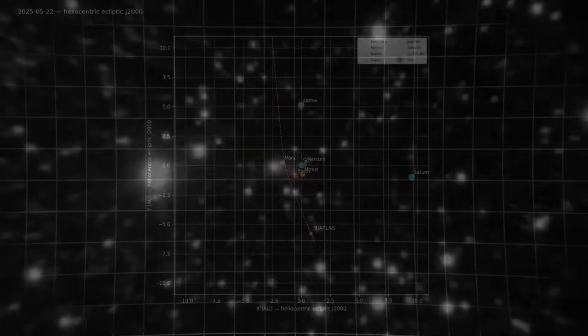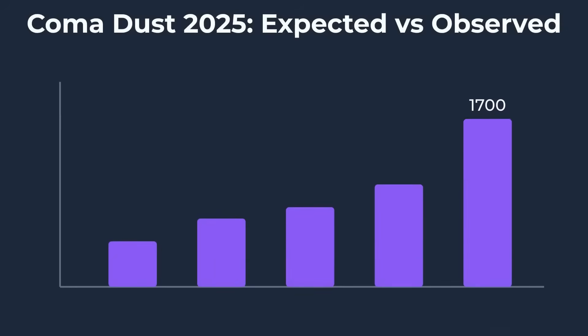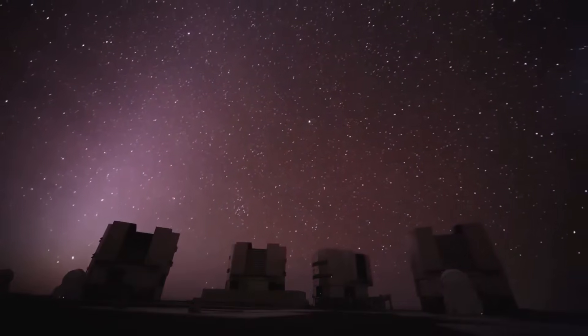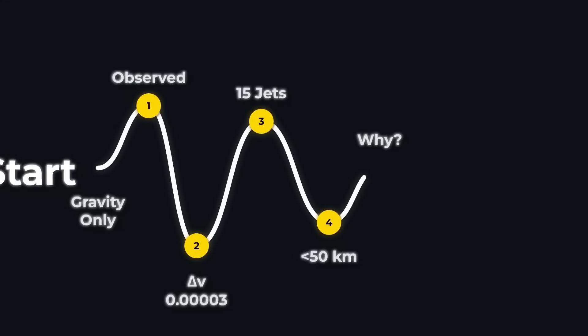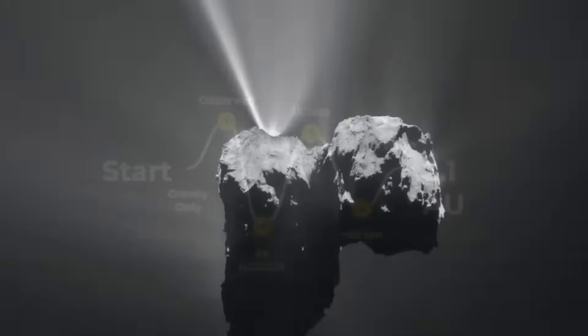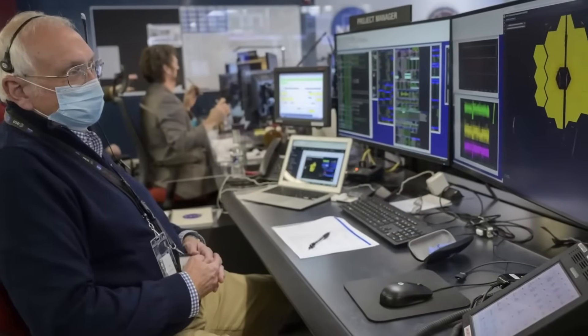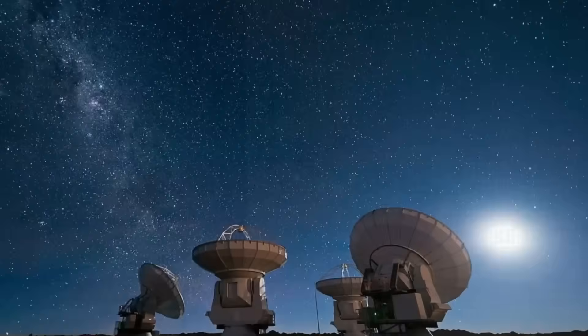Each additional observation sharpens the models. Astrometry, photometry, and spectroscopy from multiple sites allow researchers to calculate the orbit with unprecedented precision. Even subtle spectral features, like the unusual nickel-to-iron ratio, can be confirmed or refuted when multiple teams report consistent measurements. In effect, Atlas has created a real-time scientific relay, where professionals and amateurs alike contribute to a living, breathing dataset that updates daily.